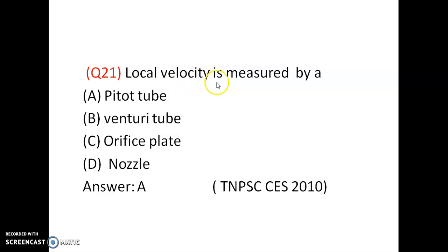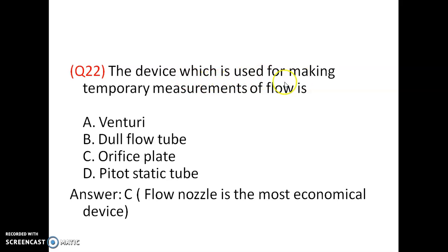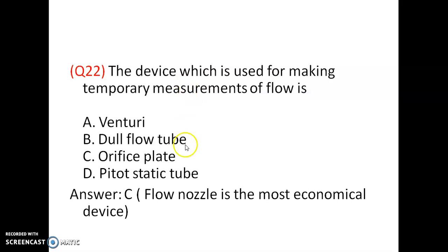Local velocity is measured by a Pitot tube. Venturi meter, orifice meter, and flow nozzle measure discharge, but velocity is measured using the Pitot tube — answer A. The device used for making temporary measurements of flow is the orifice plate. It is not a dual flow tube, venturi meter, or Pitot static tube. Flow nozzle is the most economical device for making flow measurements, but the orifice plate is used for making temporary measurements.